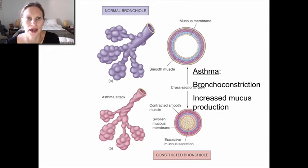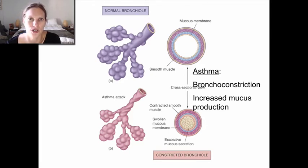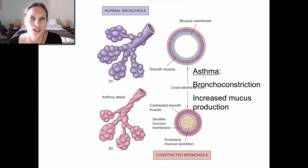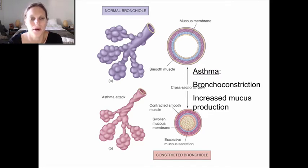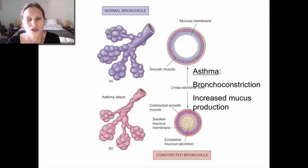Asthma is a very common condition affecting adults and children in the United States and worldwide. It's considered an atopic disorder, meaning it's immune-mediated — essentially a hyperreactivity or hypersensitivity disorder affecting the airway. When an antigen is encountered, it causes bronchoconstriction: contraction of smooth muscle lining the airway. Because this is an allergic condition, there's also an increase in mucus production, forming a plug — characteristic of an asthma attack.